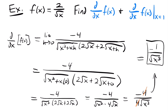We can reduce by the factor of 4, giving us negative 1 over the square root of x cubed. That is our derivative. To find its value at x equals 1, we plug in 1: 1 cubed is 1, the square root of 1 is 1, so it's negative 1 divided by 1, which equals negative 1.